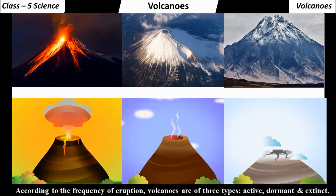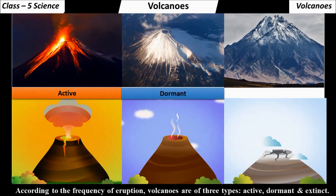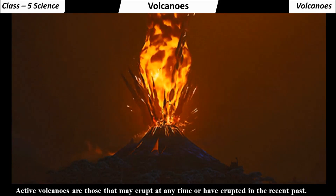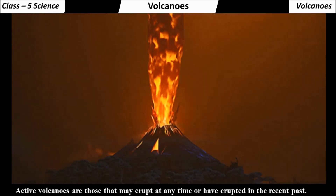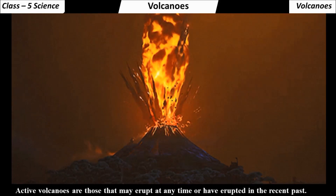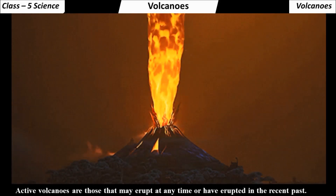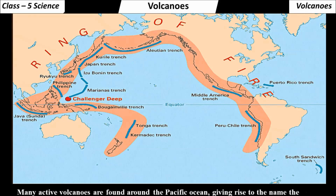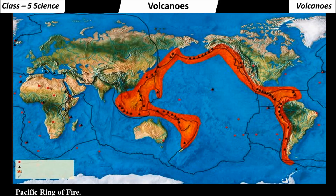According to the frequency of eruption, volcanoes are of three types: active, dormant and extinct. Active volcanoes are those that may erupt at any time or have erupted in the recent past. Many active volcanoes are found around the Pacific Ocean, giving rise to the name the Pacific Ring of Fire.